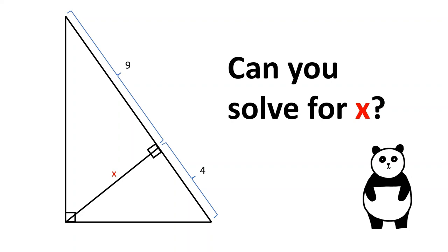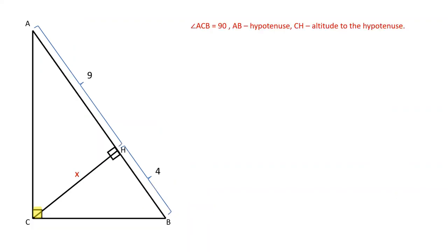Let's solve this problem. ABC is a right triangle, angle ACB is 90 degrees, AB is the hypotenuse, CH is the altitude drawn from the right angle to the hypotenuse.